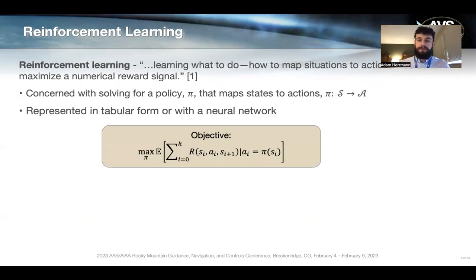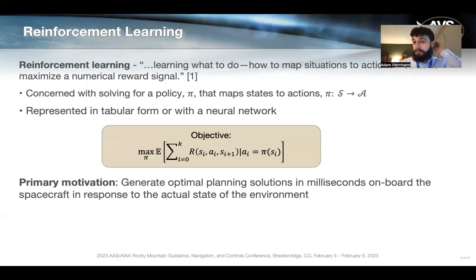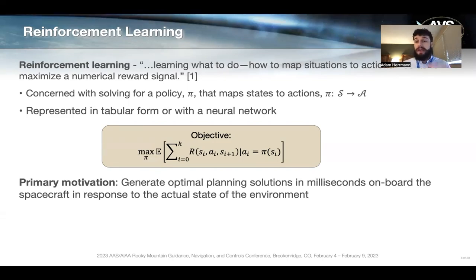Here's the formal objective of an RL problem: we're trying to select the policy that maximizes the expected value of the sum of all future reward. This is for a finite horizon problem, so there's no discounting of rewards. Our primary motivation for using RL for spacecraft planning is that we can generate optimal planning solutions in just milliseconds onboard the spacecraft in response to the actual state of the environment. So if you get a new science opportunity, your closed-loop planning process will automatically handle that for you, provided you've trained everything correctly.